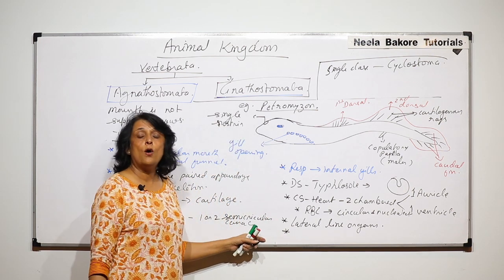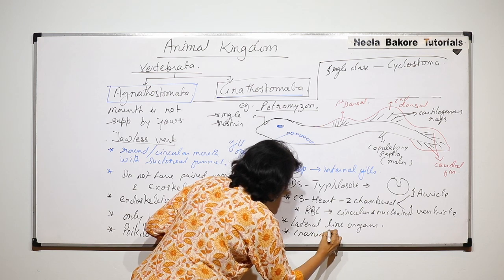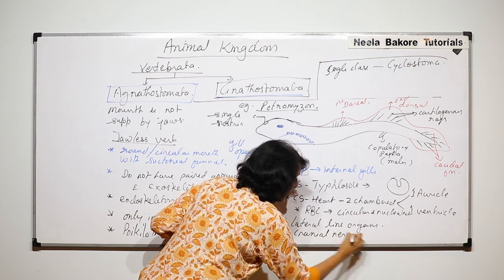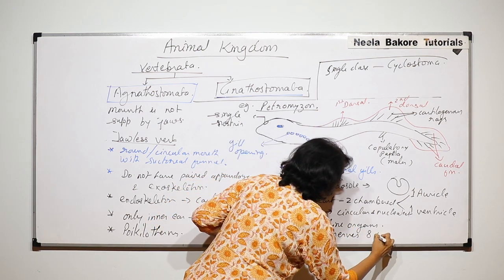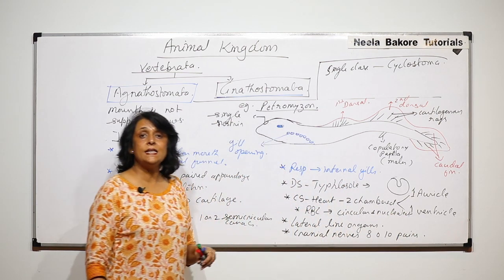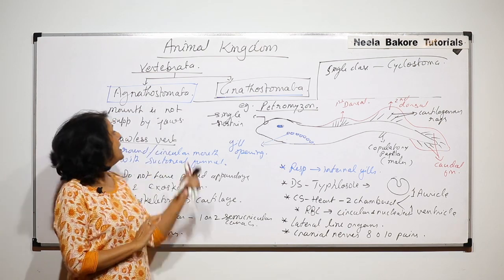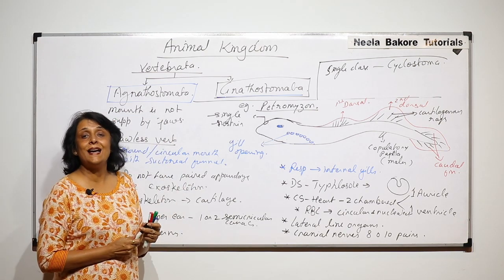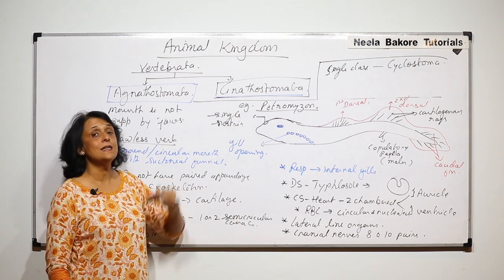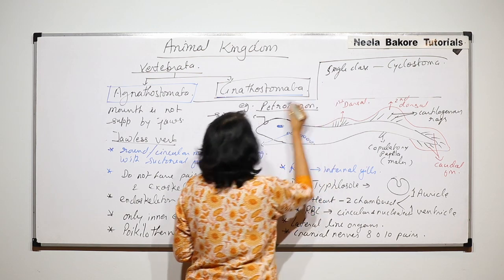Number of cranial nerves is eight or ten pairs. These are some special characteristic features of Agnathostomata which has only one class that is Cyclostomata. We will take one more example.